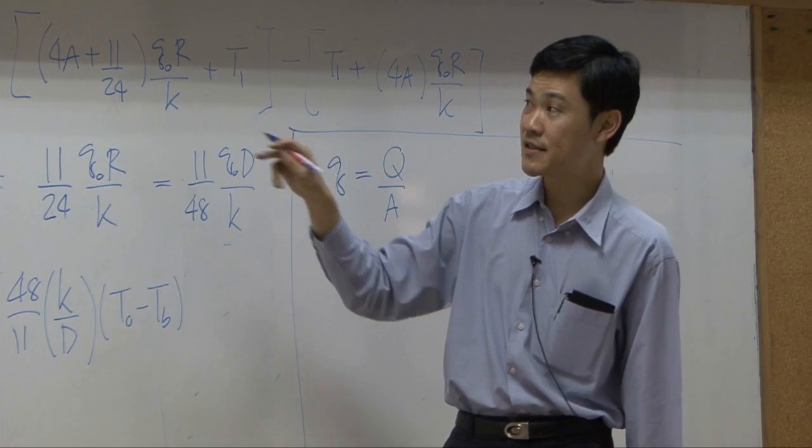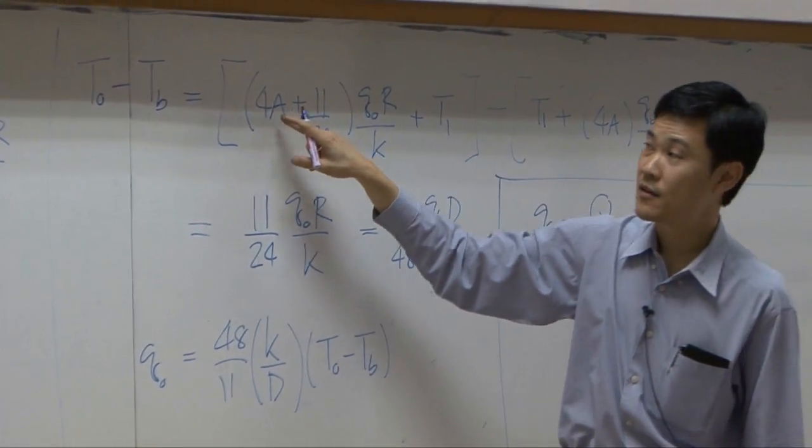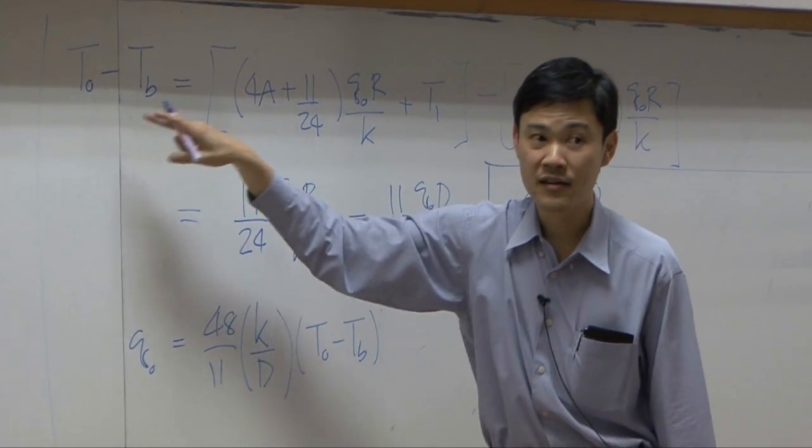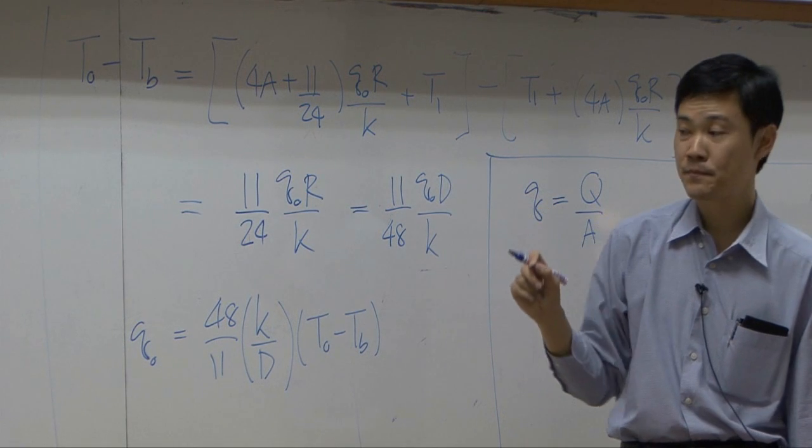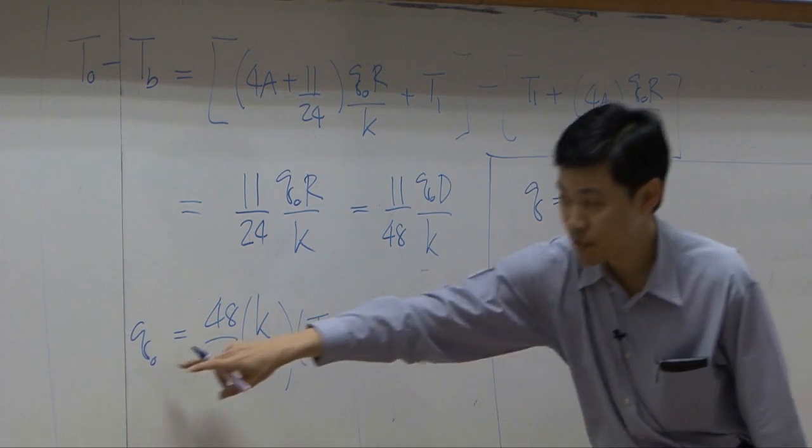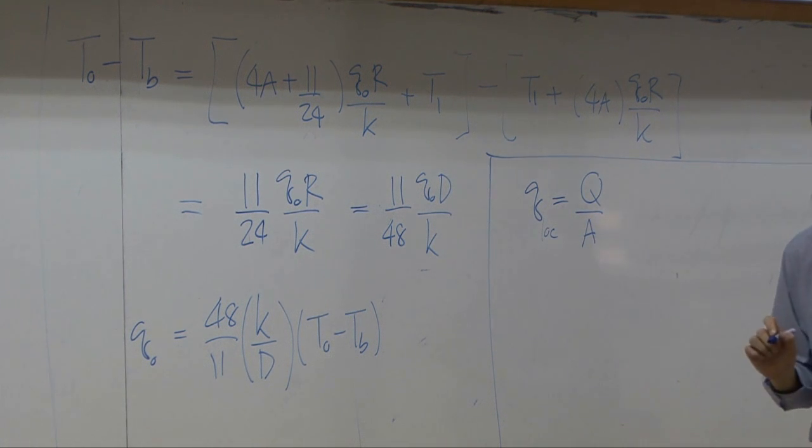As you can see here, temperature is function of location. So difference here is difference at one certain position. That means the Q here that you calculated is local heat transfer. It's calculated locally.